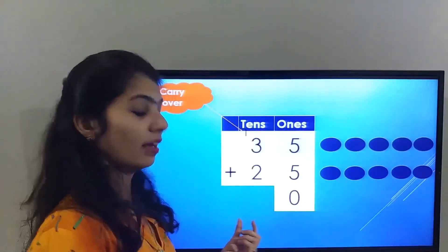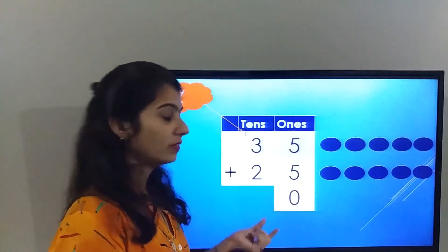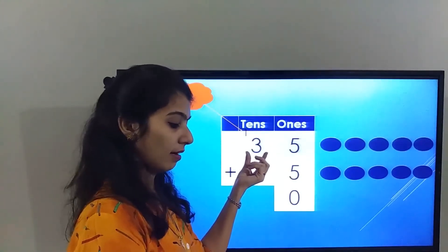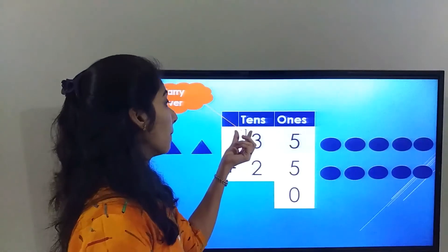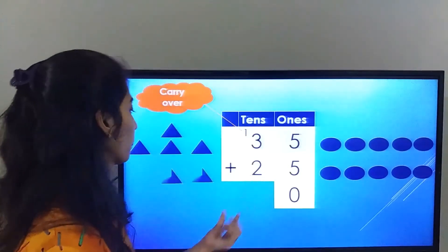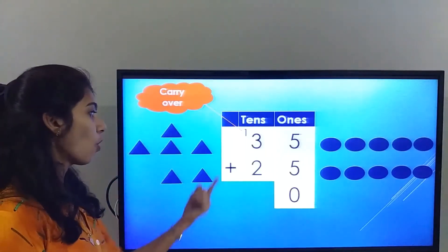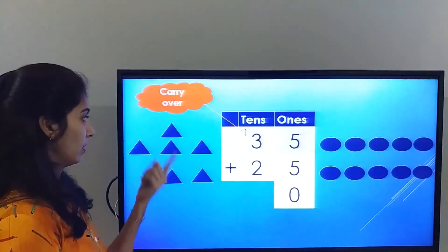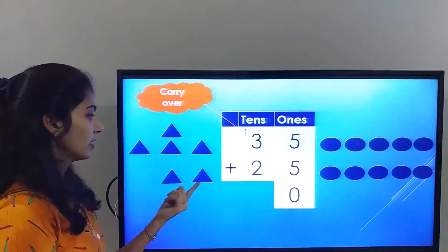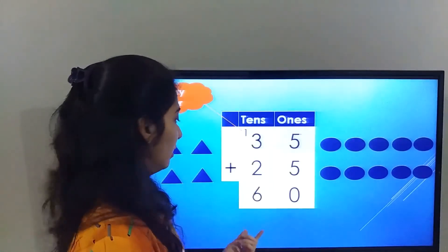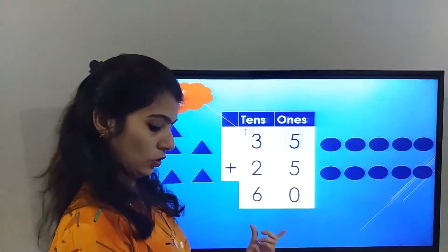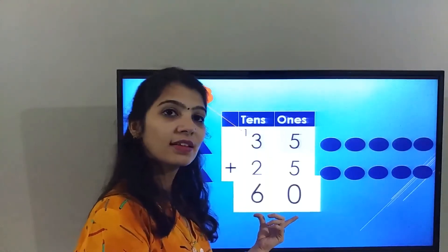Now let's solve the tens place. The numbers in the tens place are 3 plus 1 plus 2. Let's count all the triangles together: one, two, three, four, five, six. The answer in the tens place is 6. So the final answer we got is 60.